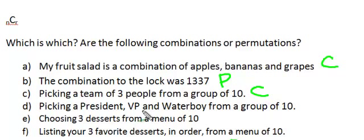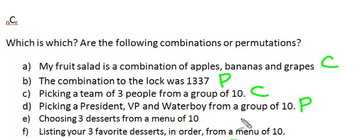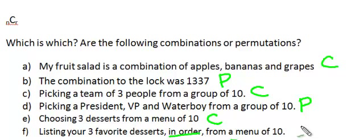Picking a president, vice president, and waterboy from a group of ten — it does matter which position they are in, so this is a permutation. Choosing three desserts from a menu of ten — you're picking them as a group, so it's a combination. Listing your three favorite desserts in order from a menu of ten — when you put them in order and the order matters, it becomes a permutation.